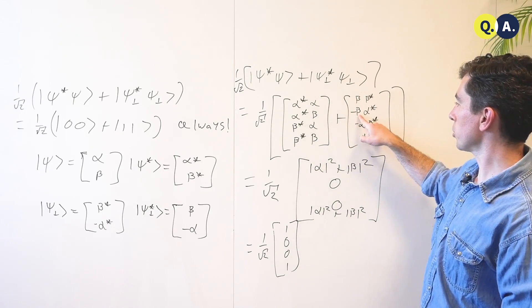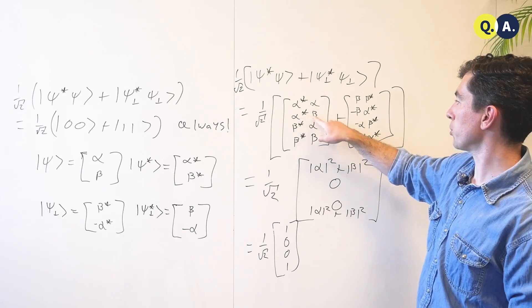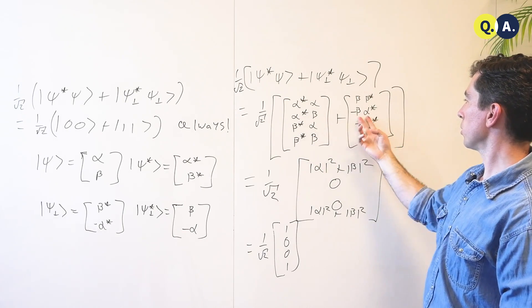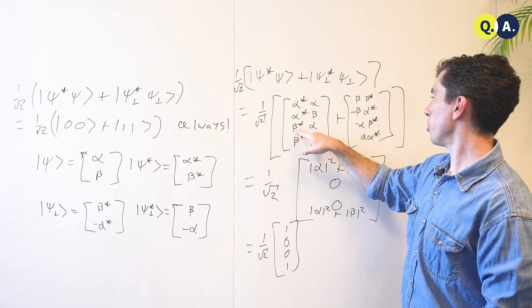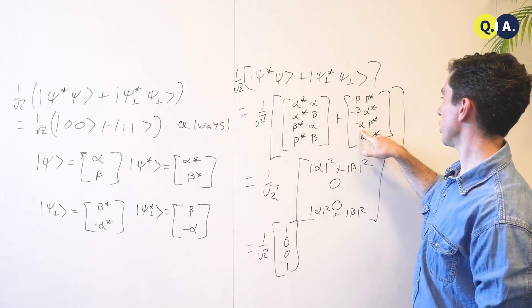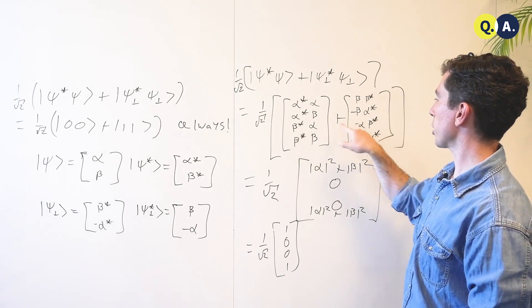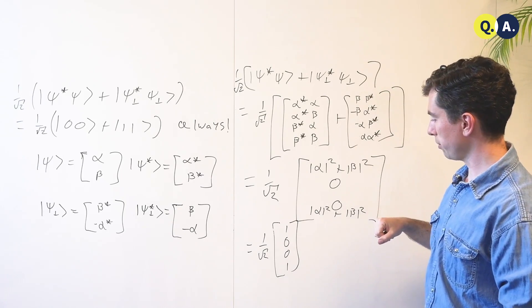And then these inner terms cancel, because you have an alpha star beta minus beta alpha star, this has just been flipped here, and a beta star alpha minus alpha beta star. If I flip these two, it becomes obvious that they're equal and opposite, so they cancel.